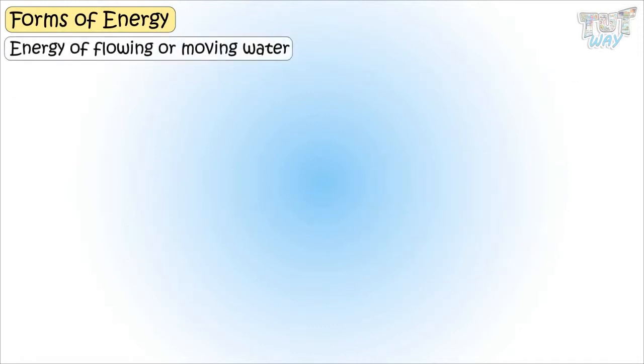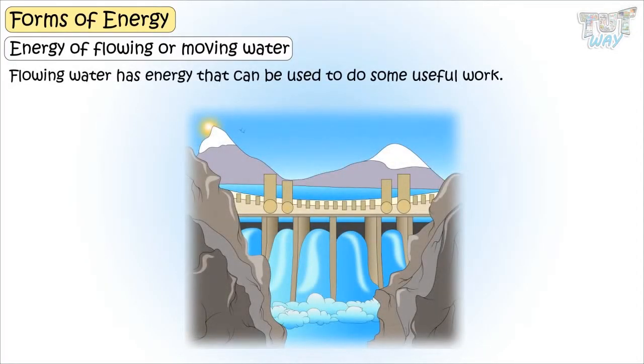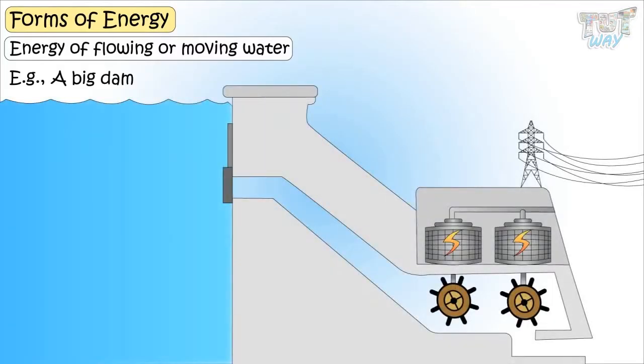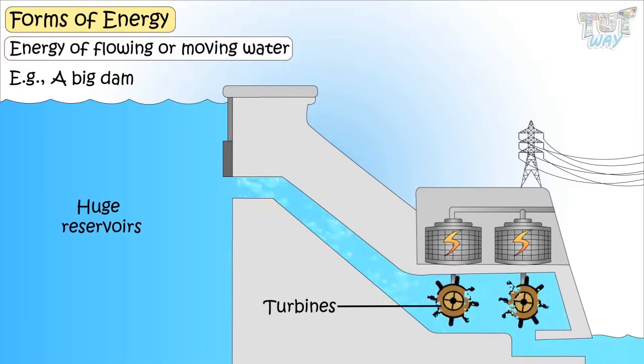Now let's learn energy of flowing or moving water. The flowing water has energy that can be used to do some useful work. Here is an example. In big dams, water is stored in big reservoirs. And from these reservoirs, water is thrown from big heights on turbines. This fast-falling moving water rotates the turbines, which in turn runs the generators that produce electricity.